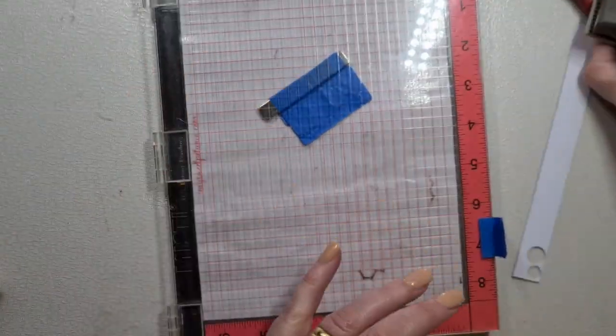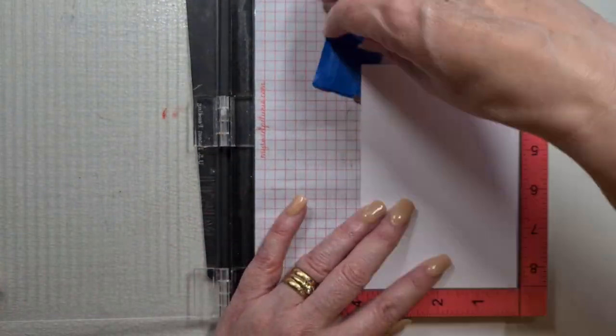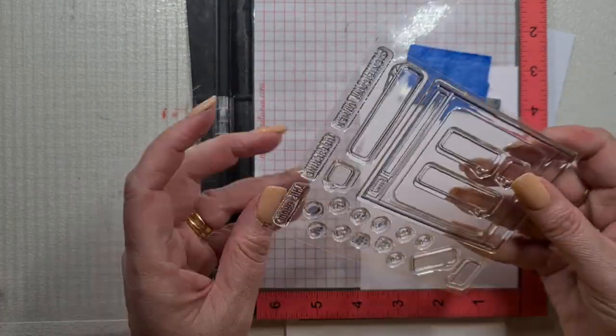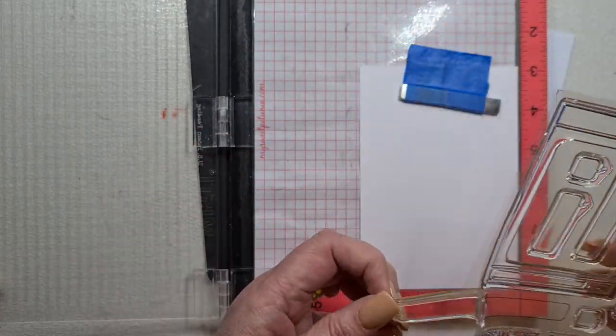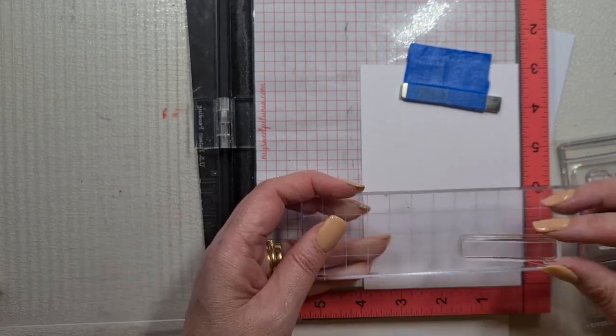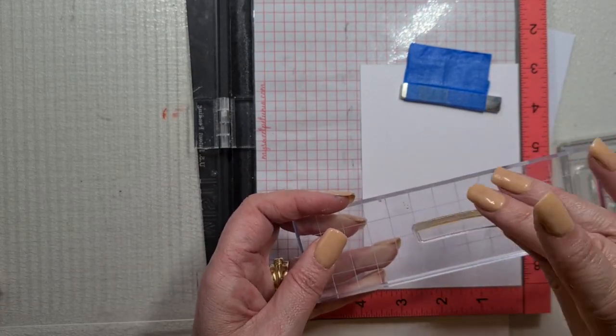You don't want anything too dark, but maybe just a very light shadow to give it that effect. Here we have Text You Later, this is a Stampin' Up one. I'm going to use the smiley face and I'm going to use the speech bubbles.